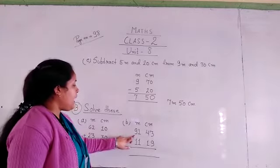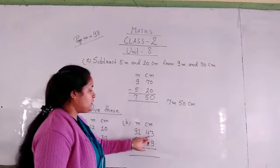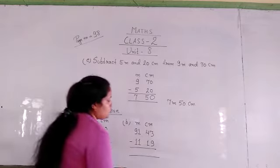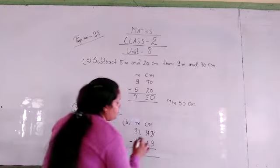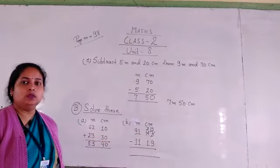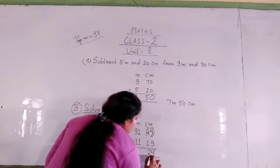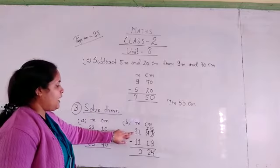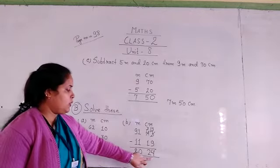Next number B: 91 meter 43 centimeter minus 11 meter 90 centimeter. Here we cannot subtract 3 from 9, so we borrow. It goes to 4 and takes 1, becoming 13, and the 4 becomes 3. Now 13 minus 9 is equal to 4, and 3 minus 1 is equal to 2. Then 1 minus 1 is equal to 0, and 9 minus 1 is equal to 8. Our answer is 80 meter 24 centimeter.